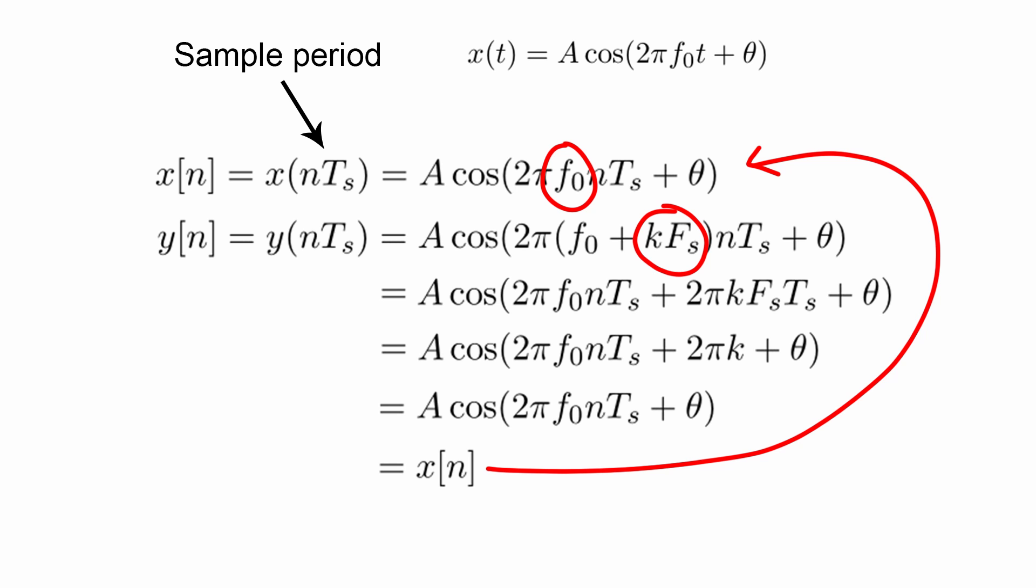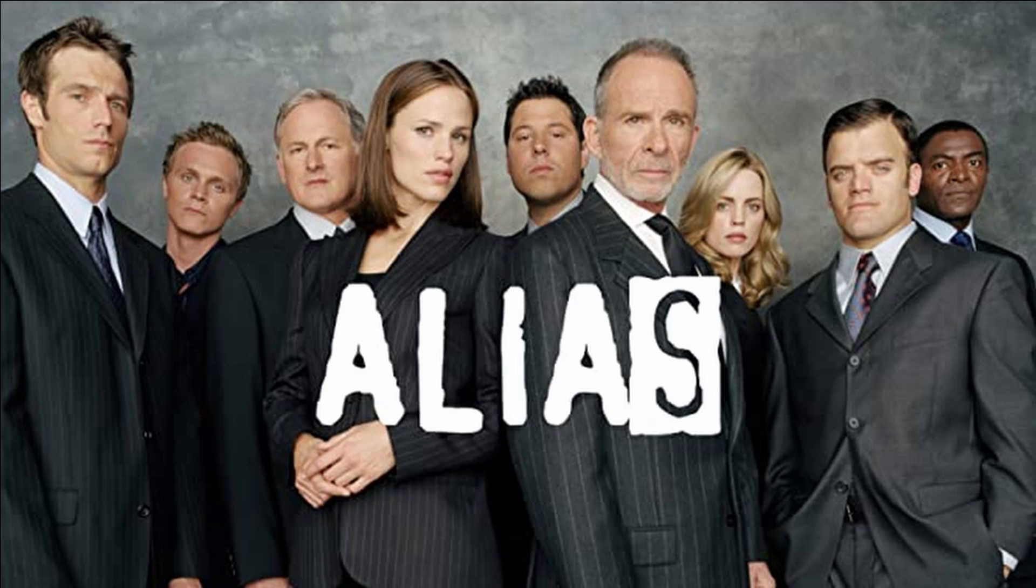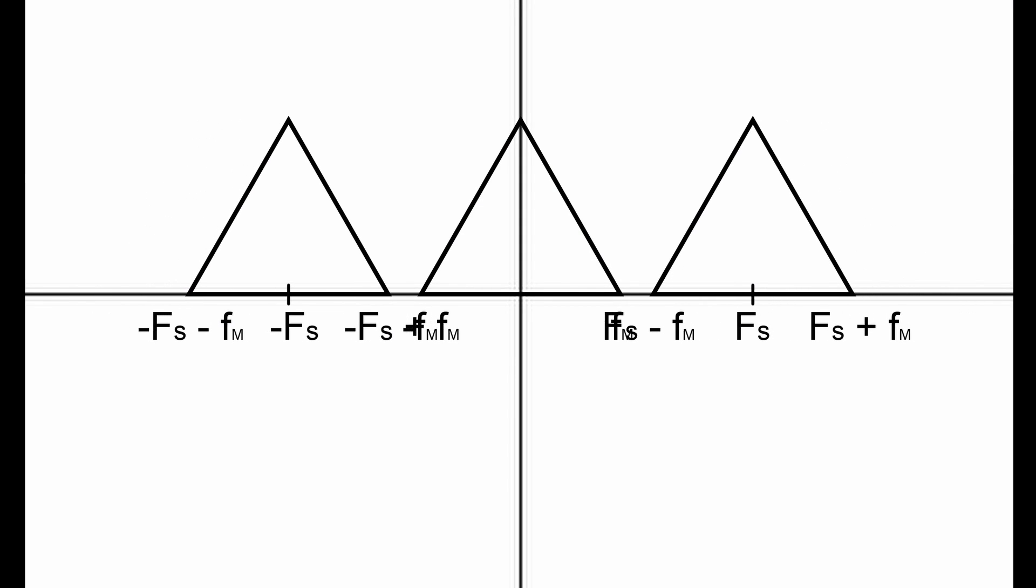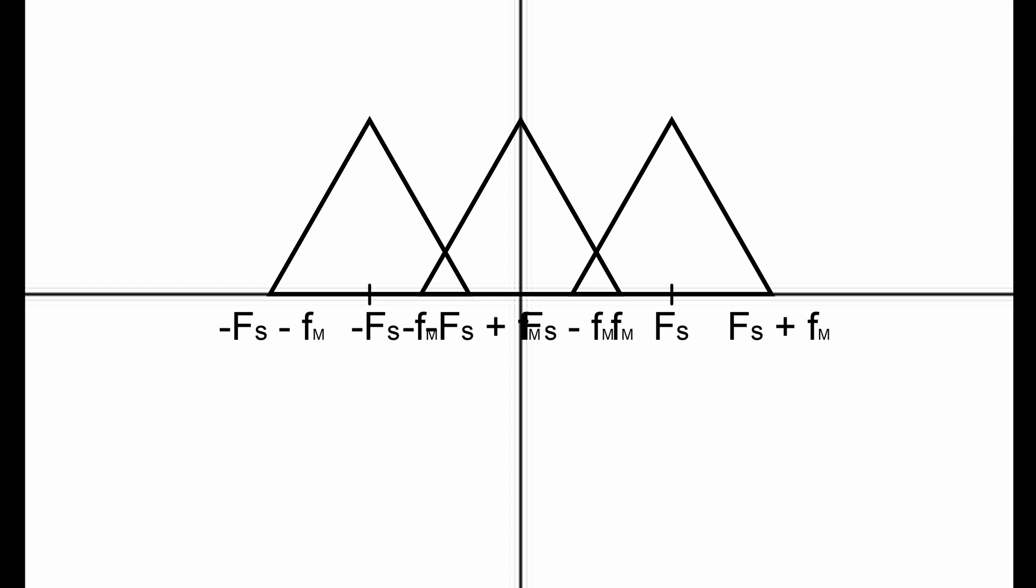In the frequency domain, aliasing can be seen when your signal has so much width that it starts overlapping with its clones created from convolving with the impulse train.